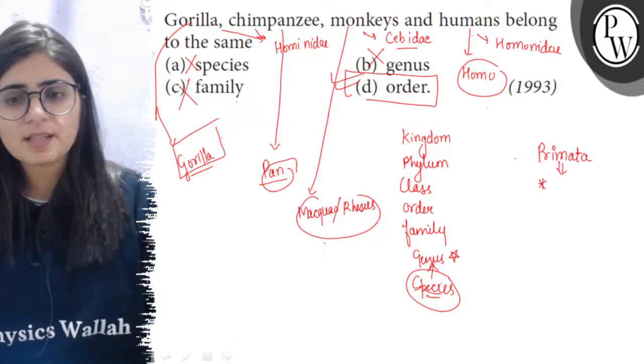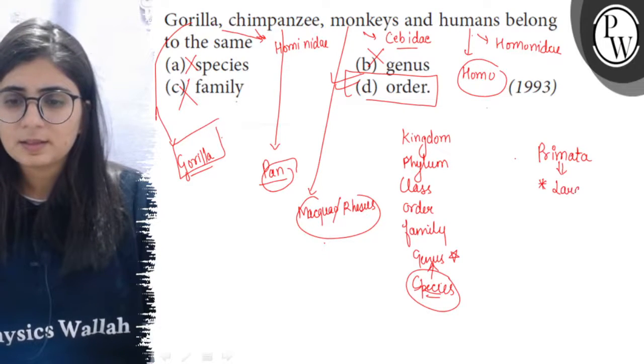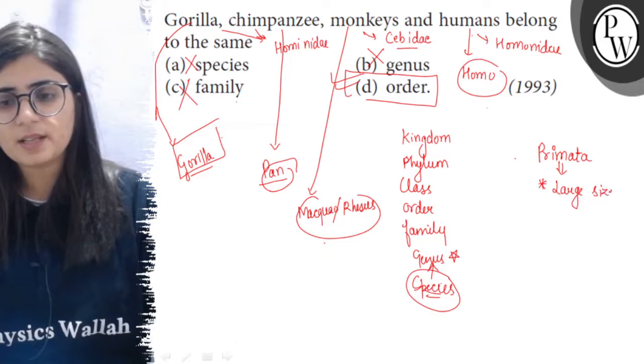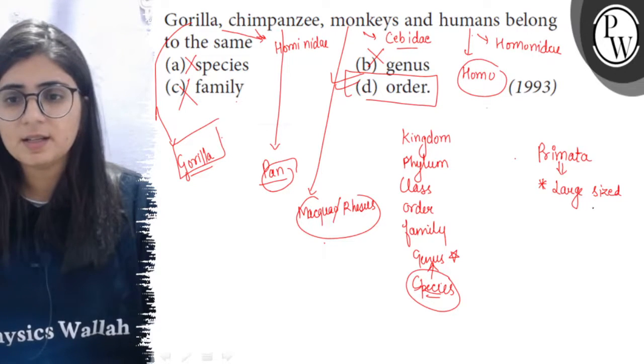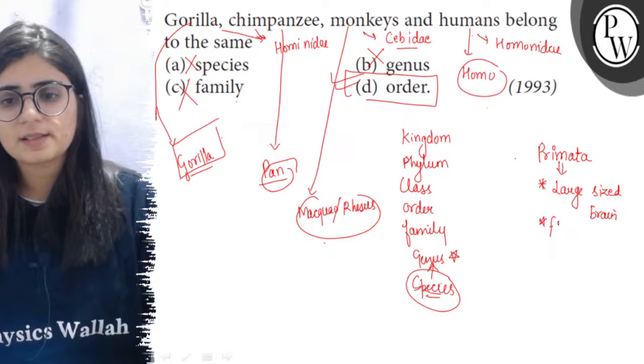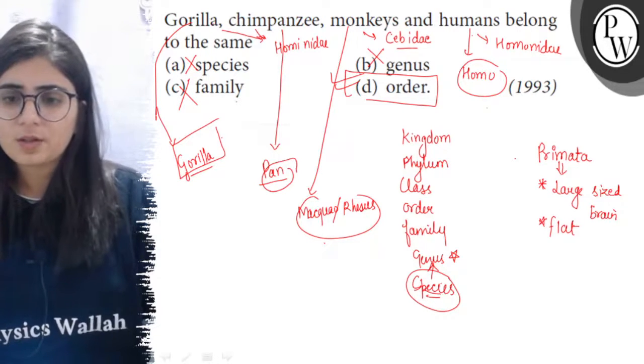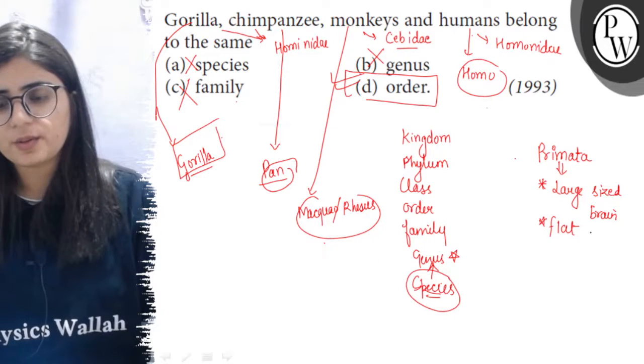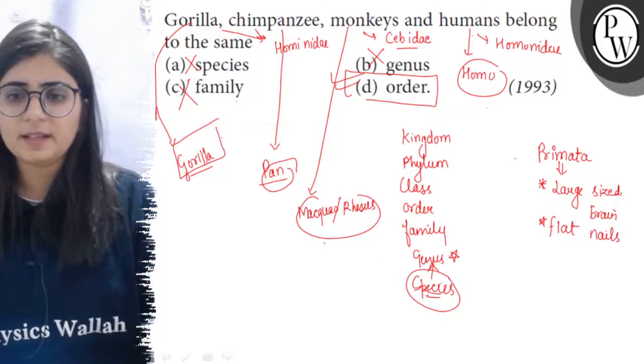Order Primates is characterized by large brain size. All these animals have large cranial capacity - large brain size with flat nails. No claws or hooves are present; these animals have flat nails.